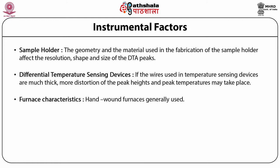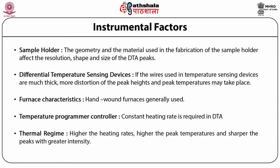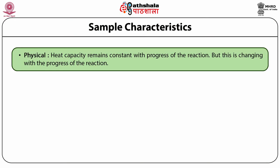Furnace characteristics: the type of winding shows a direct effect on the DTA curve. If the winding in the furnace is not uniform, the baseline is changed — this is generally seen in hand-wound furnaces. Selecting the temperature programmer/controller is very important because a constant heating rate is required in DTA. Thermal regime: the heating rate has a great influence on the DTA curve — higher the heating rate, higher the peak temperature and sharper the peaks with greater intensity. Generally, heating rates of 10 to 20 degrees per minute are employed. The effect of particle size is related to packing density and overall thermal conductivity; particle size changes peak area, peak temperature, and completion temperature.